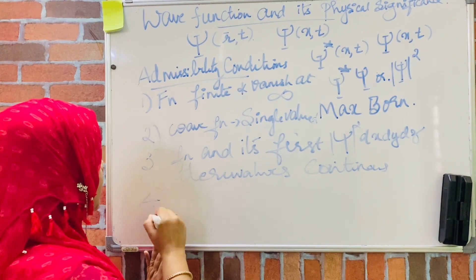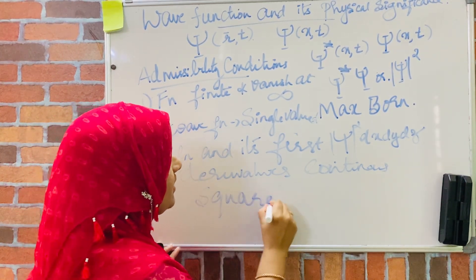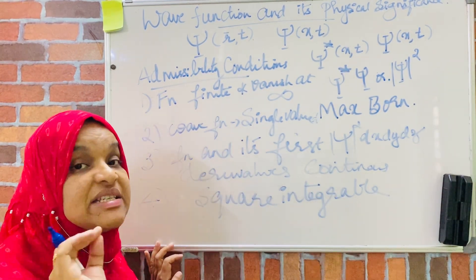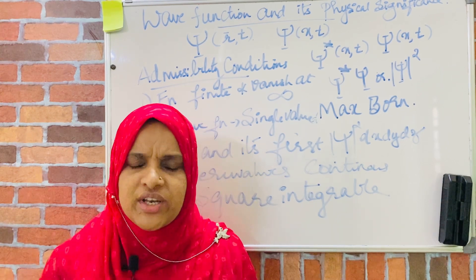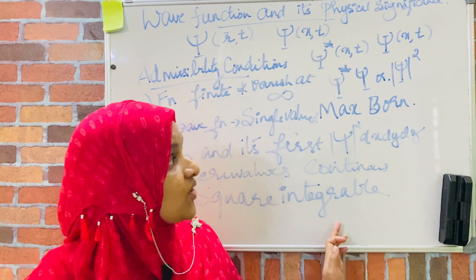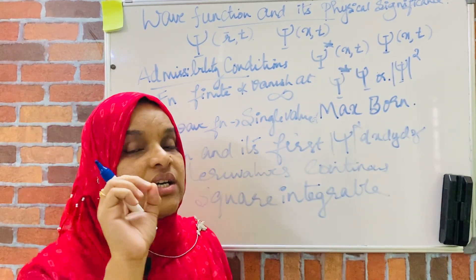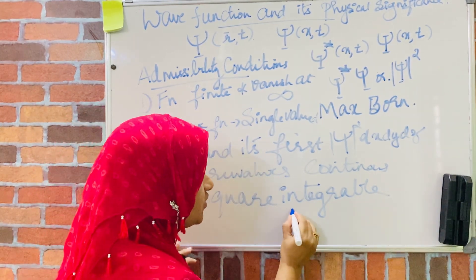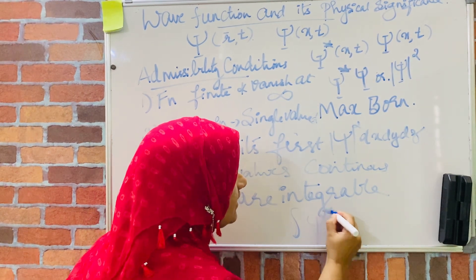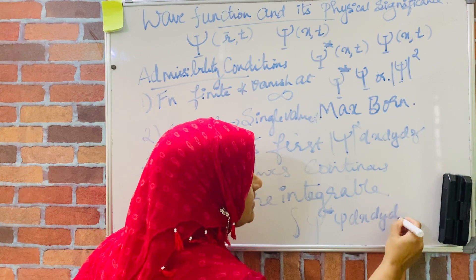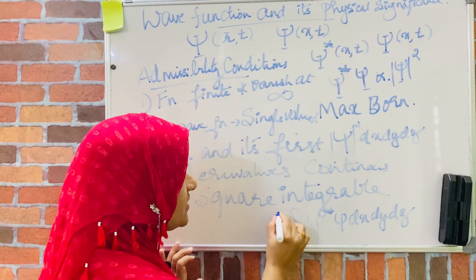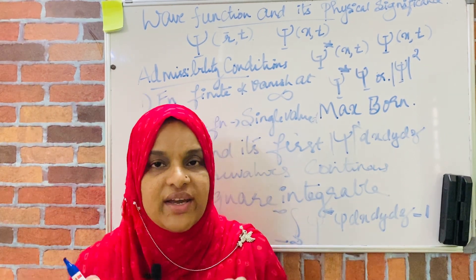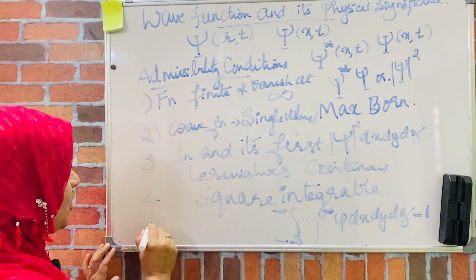The fourth condition is that the function should be square integrable. That is, if we take the square of the function, it should be integrable. We need the integral of the square of the wave function for the probability interpretation — if you are considering the entire region, the probability of finding the particle should be equal to the integral of psi star psi dx dy dz. Integrating from minus infinity to plus infinity, this value should be equal to 1 if the particle is present. This condition is also known as the normalization condition.